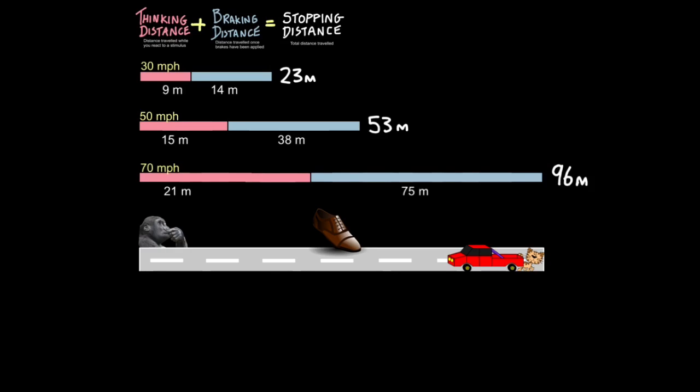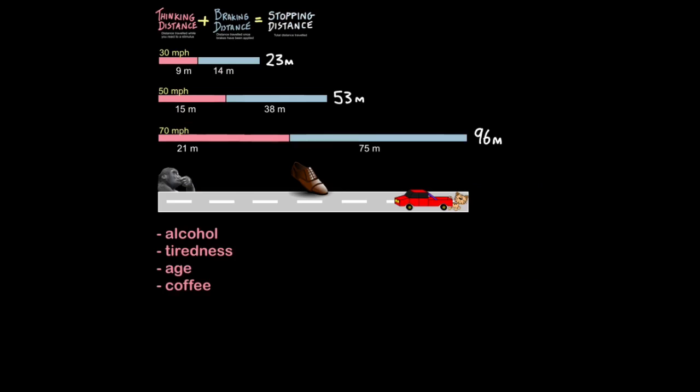This is why many road safety adverts have a slogan kill your speed not a child. You can see how much safer it is to travel at 30 mph. But speed isn't the only factor that affects these distances. There are other things as well.